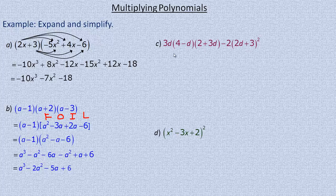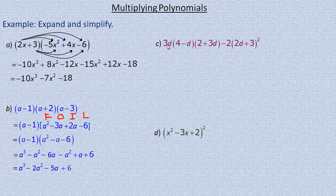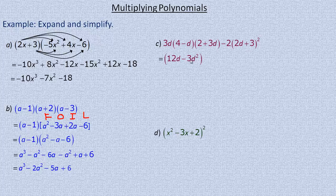In example C, we have a monomial and two binomials to multiply, plus a binomial squared multiplied by 2, all separated by a subtraction sign. I need to do all the expanding and then collect like terms. I'm going to multiply the 3d into the first binomial first: 3d times 4 is 12d, and 3d times negative d is minus 3d squared. Then I'll write the rest — (2d plus 3) squared — on the end.